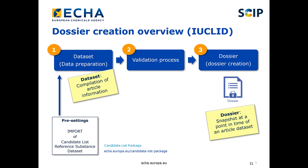The dossier preparation process is divided in three main steps: dataset preparation, validation process, and dossier creation. The first step is to prepare the data — we will create a dataset, which is a compilation of article information. The validation process is an automated process to ensure basic consistency and integrity of the data. It includes two types of rules: business rules and quality rules. If business rules are failed, the dossier will be rejected on submission. If quality rules are failed, the notifier will receive a warning message to improve the quality of the dossier. Once you have compiled all needed information and validated your data, you can create a dossier — a snapshot at a point in time of an article dataset, which is not editable, and is the i6z file that can be submitted on the submission portal.